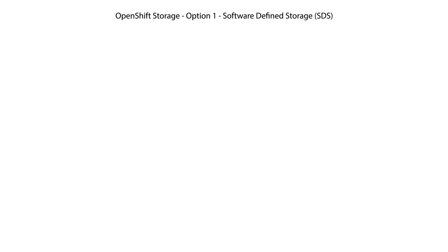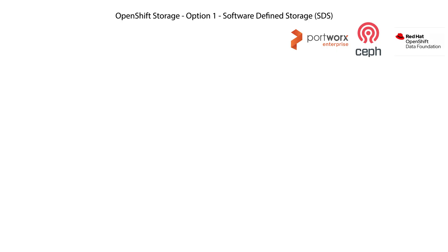First, software-defined storage running on a local drive. There are two leading commercial solutions for this category: Portworx Enterprise from Pure, and Ceph-based solutions from Red Hat or IBM such as OpenShift or Fusion Data Foundation. If you're trying to compare this option to VMware, this would be closest to vSAN storage.